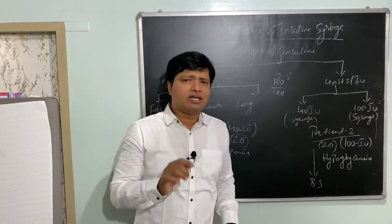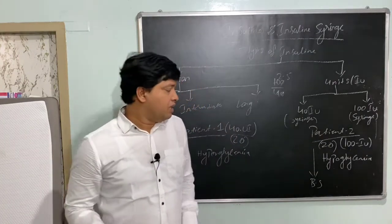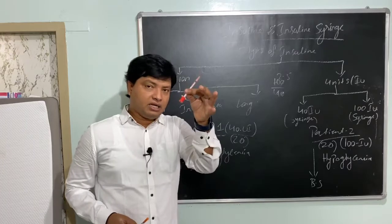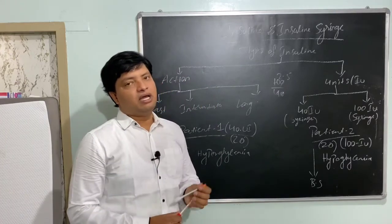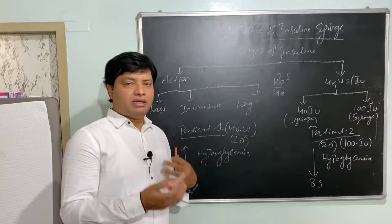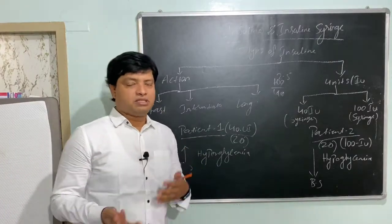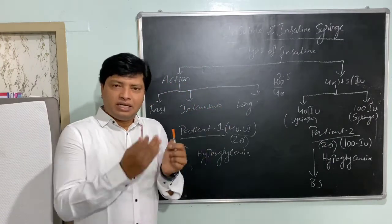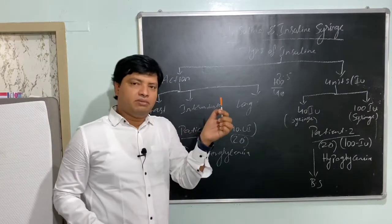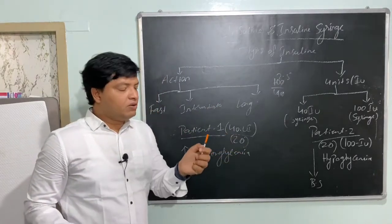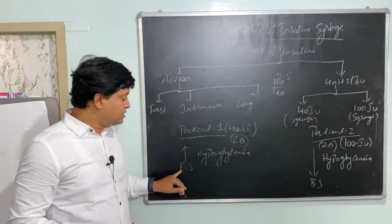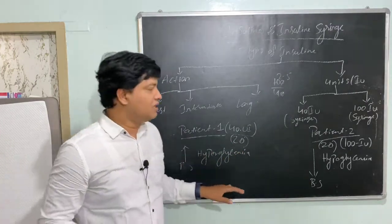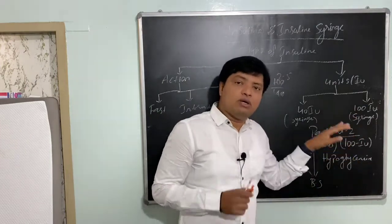Because 100-unit insulin is more concentrated, you only need to take less volume to get the effect. Now assume Patient 1, who should take insulin with the red syringe, is instead using the orange syringe by mistake. He will end up taking less insulin — because 40 units marked on the orange syringe holds less volume. Hence his blood sugar level will increase and he will get hyperglycemia.